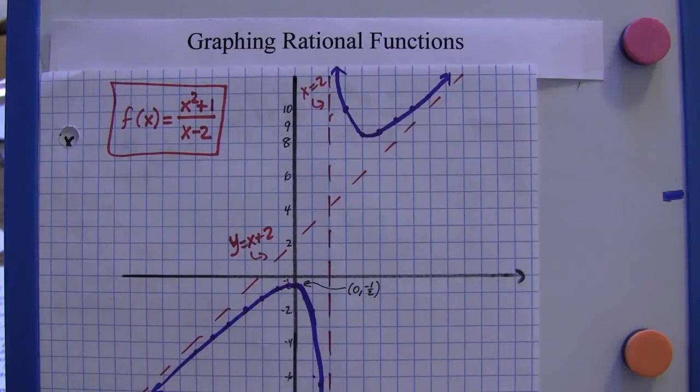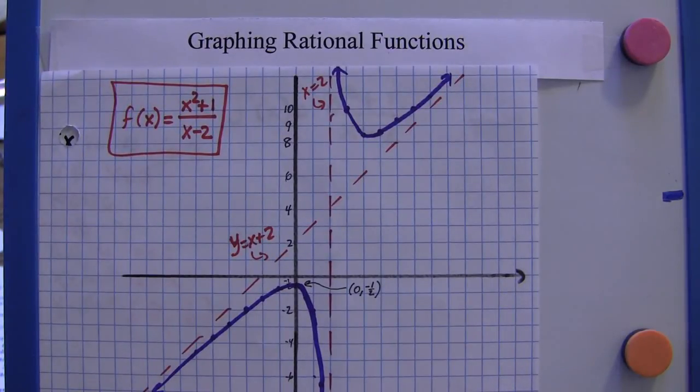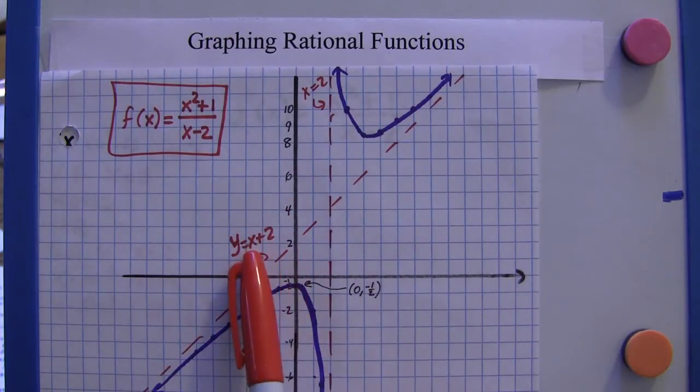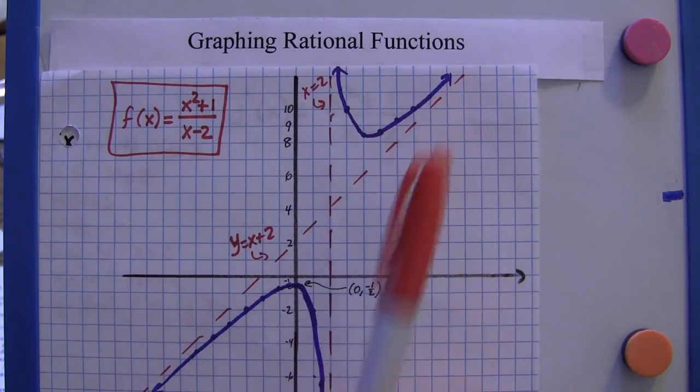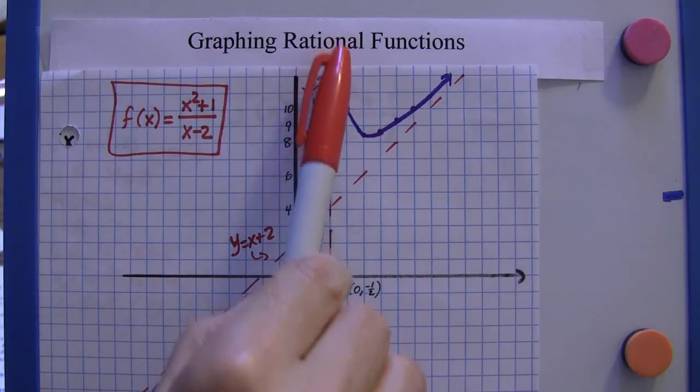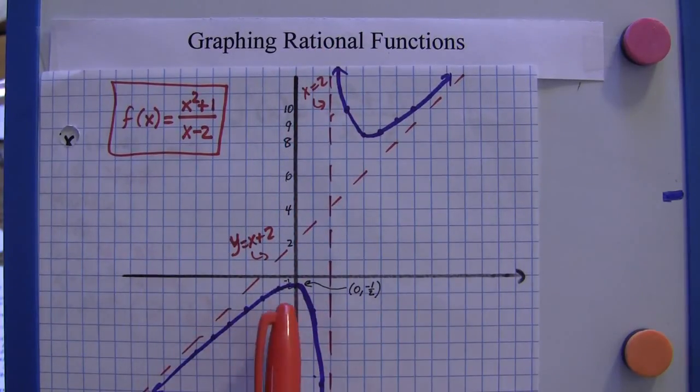And here's what the graph would look like. We've got a slant asymptote here at y equals x plus two, just like that. We've got a vertical asymptote here at x equals two. We have a y-intercept of zero, negative a half.